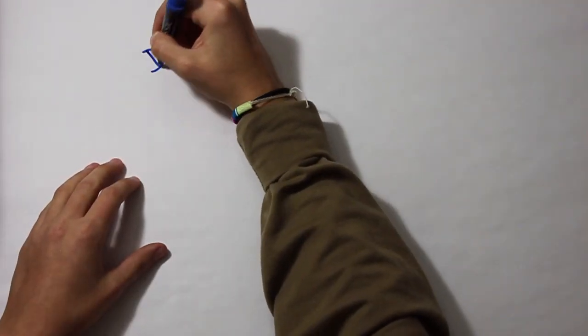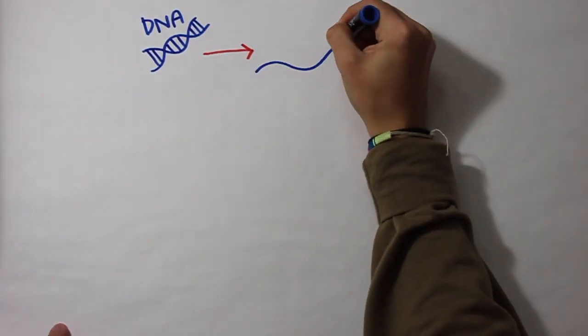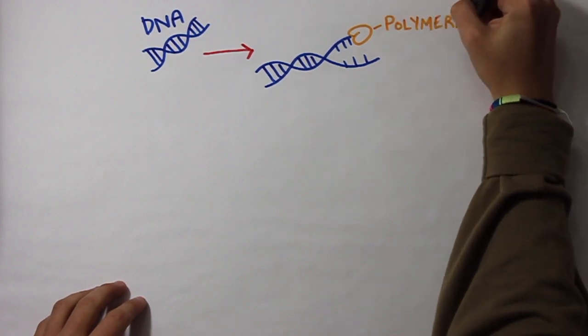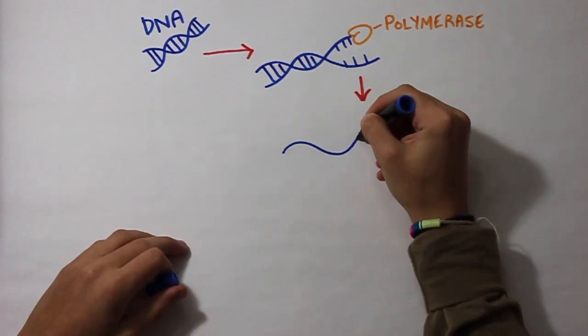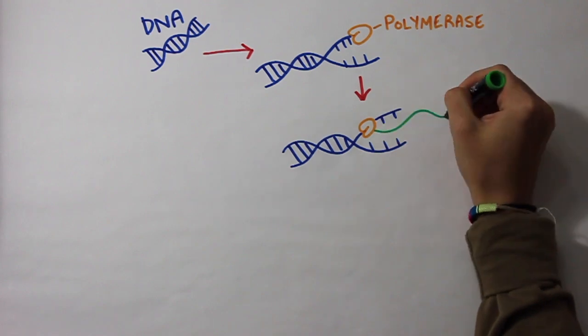Let me show you what transcription looks like. As you see here, we have DNA. Now, an RNA polymerase molecule comes and attaches itself to a gene and tears the DNA strand apart. Then, it starts moving down the single DNA strand, creating mRNA.